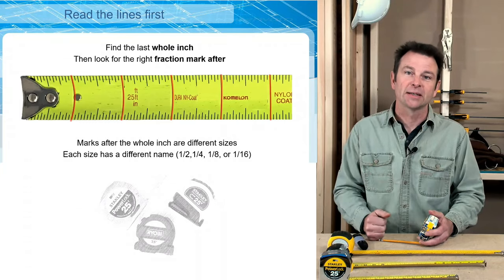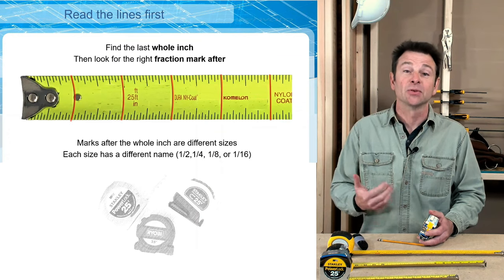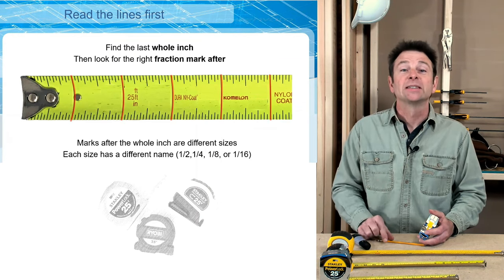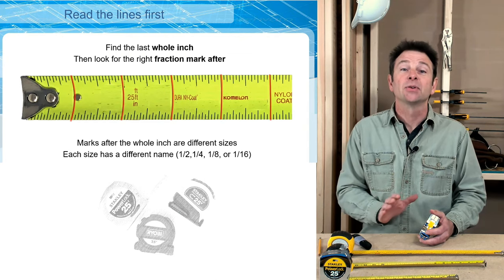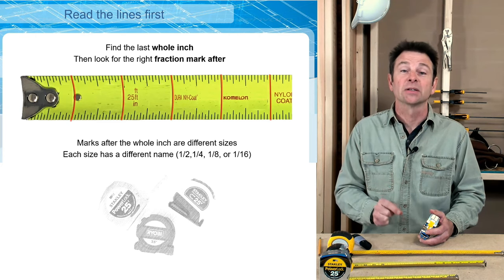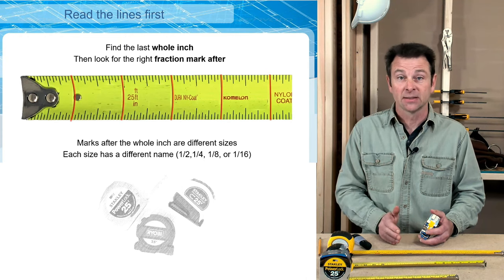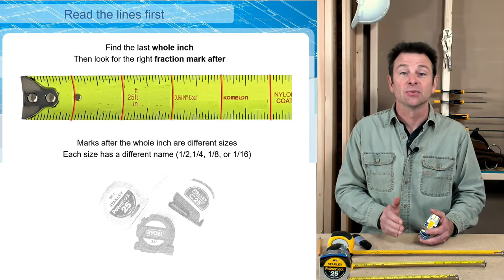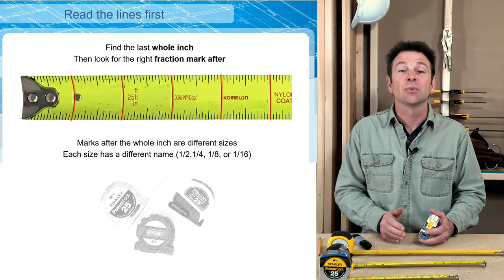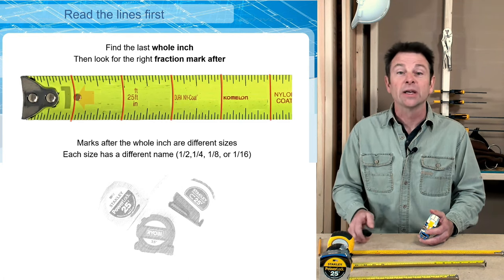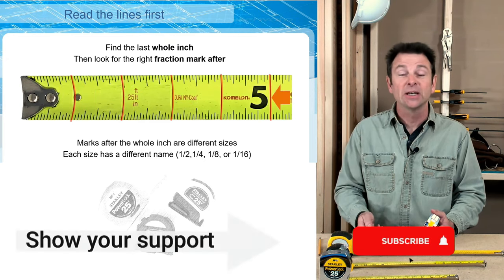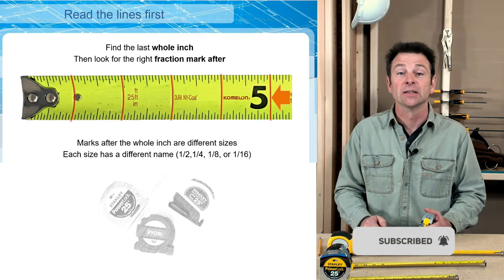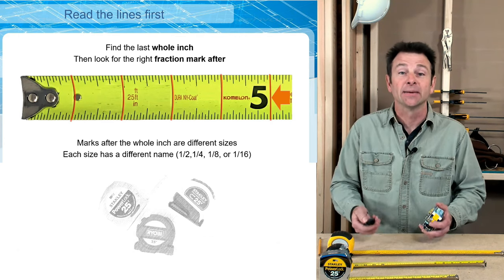To start with, we need to talk about the process of making measurements or reading a tape. I would tell you to focus on the marks first — there's a lot of numbers, a lot of noise on a tape measure. We want to focus on those marks and specifically find our whole inch mark, the last whole inch on that tape relevant to our measurement. Once we find that whole inch, we find the number associated with it, then move on to the second part of our measurement which is the fraction.